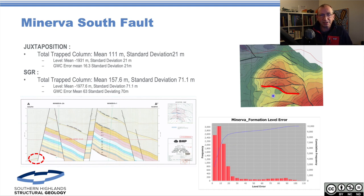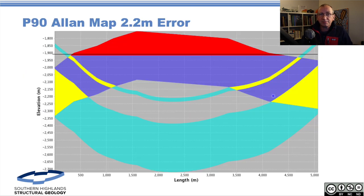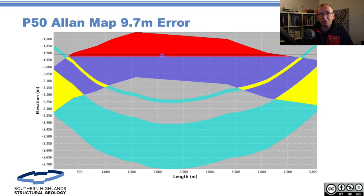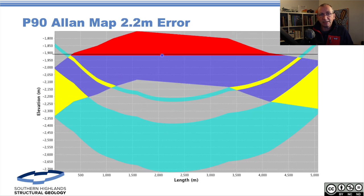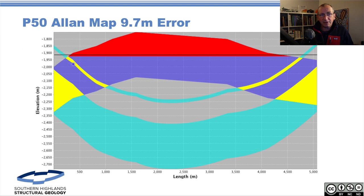Here are some of the Allan maps. This is our P90 Allan map — the black line marks our observed gas-water contact. We're seeing a 2.2-metre error in the P90 case, a 9.7-metre error in the P50 case, and a 42-metre error in the P10 case. The key leak point is this bit of geometry here — this is the delta-throw area that James et al. and the guys at Exxon talk about. They think a lot about where these rapid changes of displacement are. This is the key area to understand in terms of the fluid contacts.